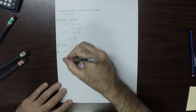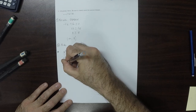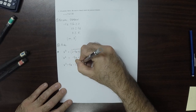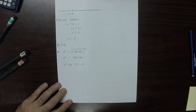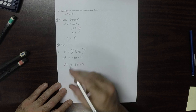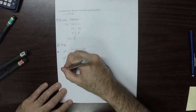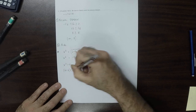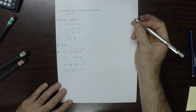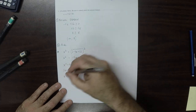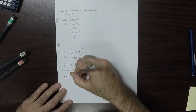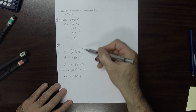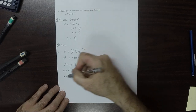Now let's get everything on one side: x squared plus 4x minus 32 equals 0. Does this quadratic factor? How about (x plus 8)(x minus 4) equals 0. So the solutions are negative 8 and positive 4. But these are solutions to the squared equation — it remains to be seen if they're solutions to the original. So those are the candidates.